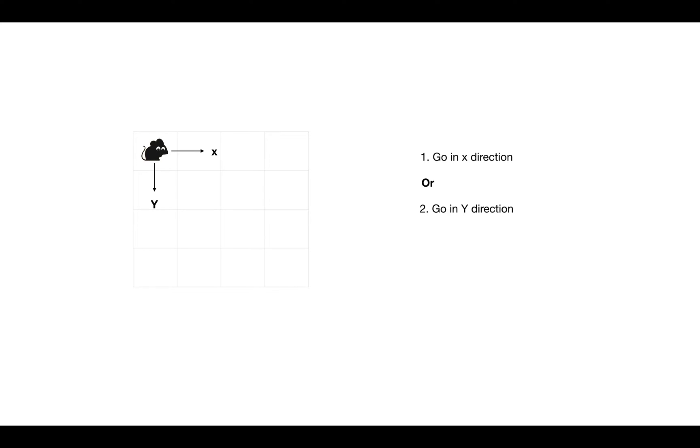Zero means a dead end and one is the valid path to be traversed by the rat. When solving this problem using backtracking, we consider four elements: choices, constraints, recursion, and the goal or base case. The choices give us hints about how to draw the recursive steps. At each step, the decision space is either we can move in the X direction or we can go forward in the Y direction — those are the only two choices.